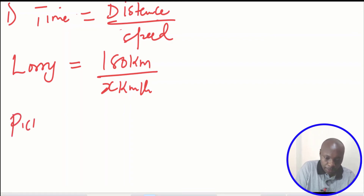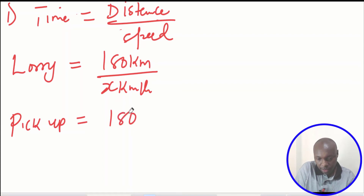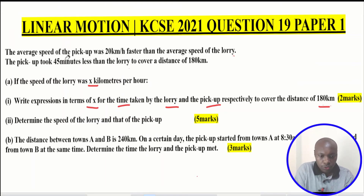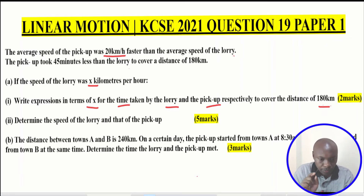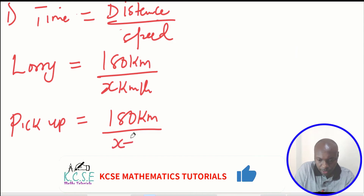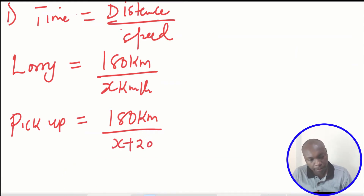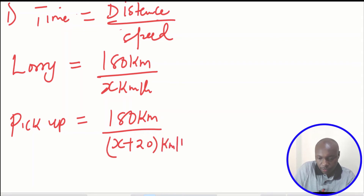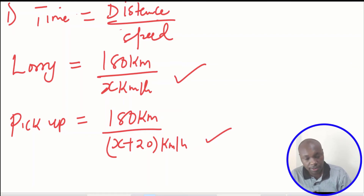Now for the pickup, the same distance. The time taken will be given by the distance, which is still 180 km, divided by the speed of the pickup. From the first statement, the average speed of the pickup was 20 km per hour faster than the average speed of the lorry. So if the speed of the lorry is x km per hour, the speed of the pickup will be x plus 20. So the time for the pickup is 180 divided by x plus 20.